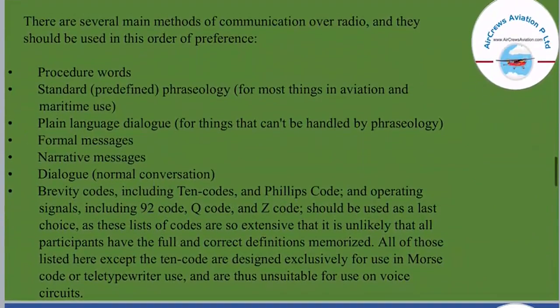There are several main methods of communication over radio and they should be used in this order of preference. The first is procedure words; next is standard or predefined phraseology, used for most things in aviation and maritime use; then plain language dialogue, for things that can't be handled by phraseology; next are formal messages, followed by narrative messages; then dialogue, which is a normal conversation between people. Last, gravity codes including 10 codes and Phillips codes, and operating signals including Q codes and Z codes, should be used as a last choice, as these lists of codes are so extensive that it is unlikely all participants have full and correct definitions memorized. All of those listed — except the 10 codes — are designed exclusively for use in Morse code or teletypewriter use and are thus unsuitable for voice circuits.